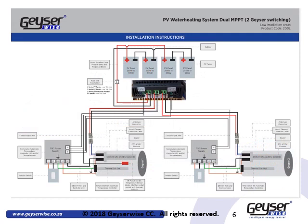GizaWise also offers a dual MPPT. You will have your PV input, an output to water heater number 1, and once water heater number 1 reaches its desired set temperature, it will automatically switch over to water heater number 2.